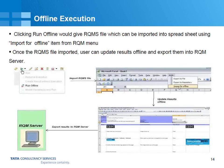Another important feature of RQM is offline execution. This is very important — when you are away from the office and don't have access to your server, you can get the files into your local system, execute your tests offline, and upload your results when you come back to the office where you have access to the RQM server.